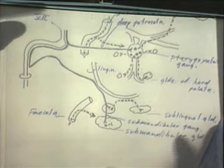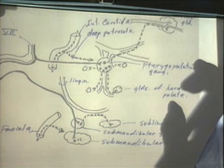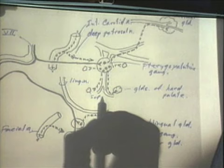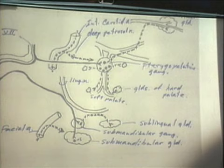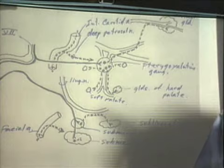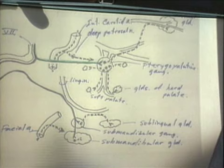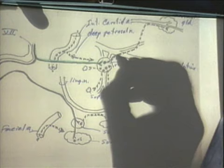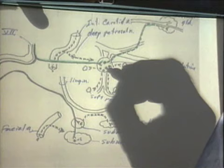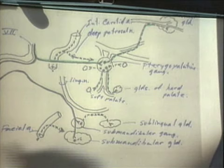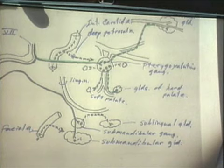Tracing the parasympathetics to the pterygopalatine ganglion: the seventh cranial nerve gives rise to a preganglionic branch — the greater petrosal nerve — which travels to the pterygopalatine ganglion. There it synapses, and post-synaptic fibers can go into the orbit or ride down with the greater palatine, lesser palatine nerves, or other branches of the maxillary system to reach the glands of the hard palate, soft palate, and nasopharynx.